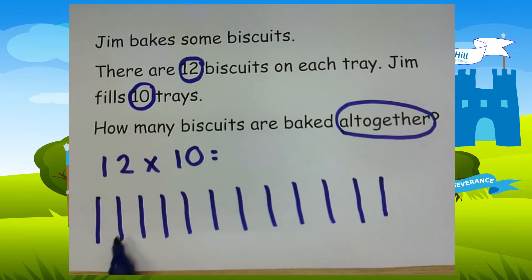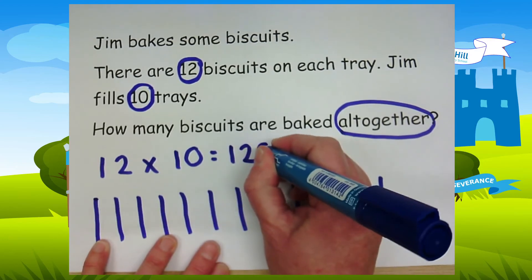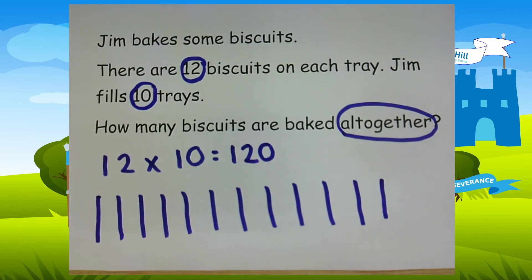Ten, twenty, thirty, forty, fifty, sixty, seventy, eighty, ninety, one hundred, one hundred and ten, one hundred and twenty. So we've got one hundred and twenty biscuits. Okay, so we know twelve lots of ten are a hundred and twenty.